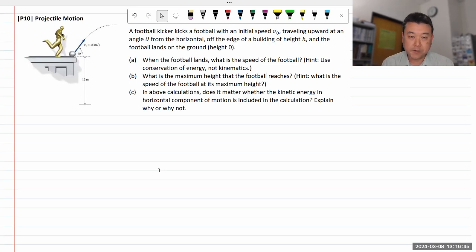So this question says, a football kicker kicks a football with some initial speed traveling upward at an angle theta from the horizontal off the edge of a building of a height. I think this is what they're calling height h. Height h and the football lands on the ground at height zero. When the football lands, what is the speed of the football?